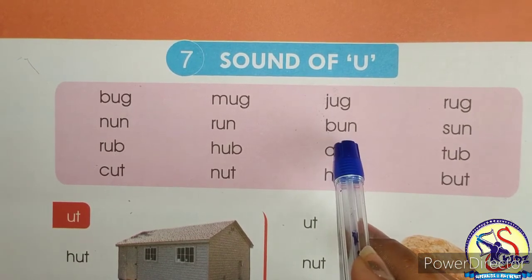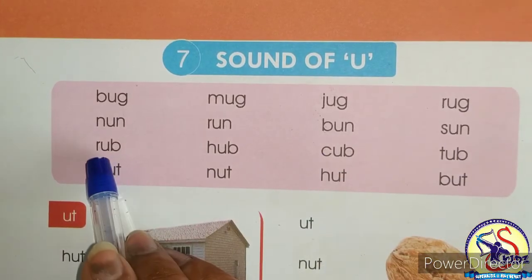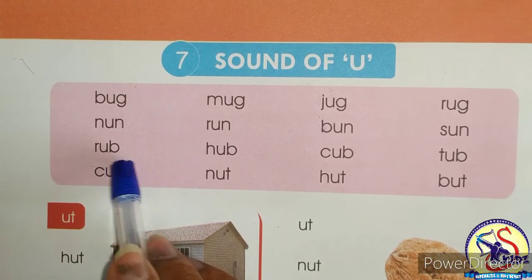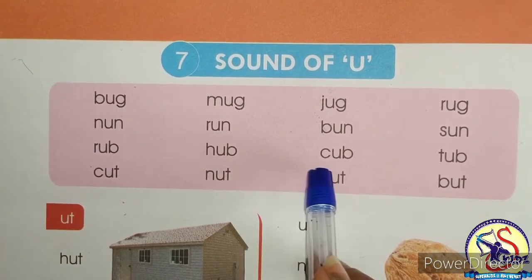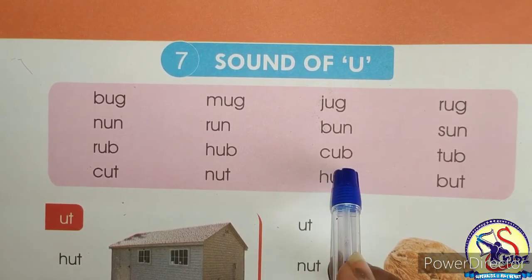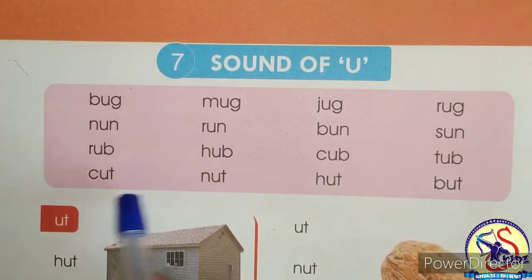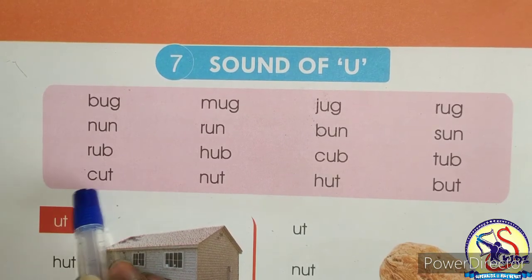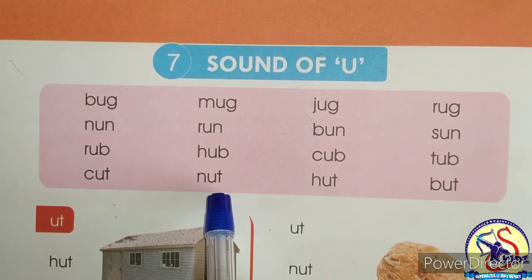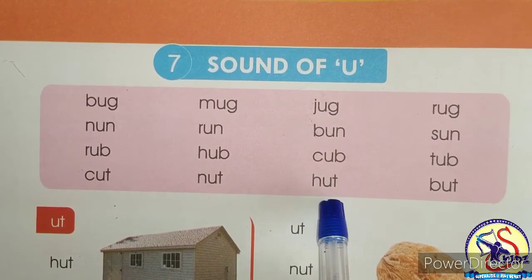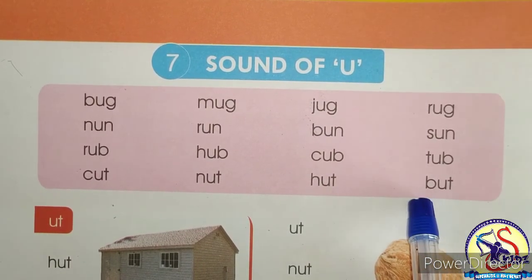B-an. S-an — sun. R-ab, rub. H-ab, hub. K-ab, cub. T-ab, tub. K-a-at — cut. N-a-t — nut. H-a-t — hut. B-a-at — but.